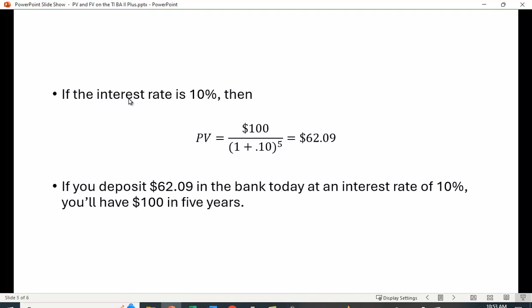Well again, we need to know an interest rate. Say the interest rate is 10%. 100 divided by one plus 0.10 raised to the fifth power turns out to be $62.09.